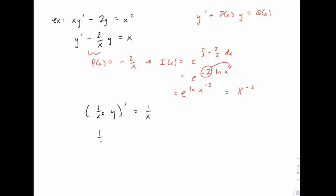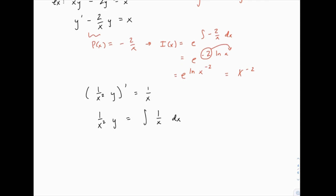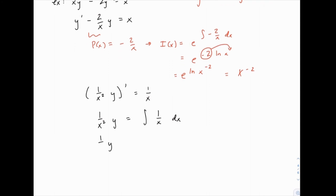Now we can integrate both sides, and integrating 1 over x gives us ln(x) plus c. Then we can multiply both sides by x squared to solve for y. And there's our final answer.